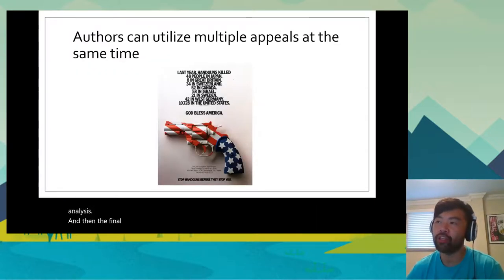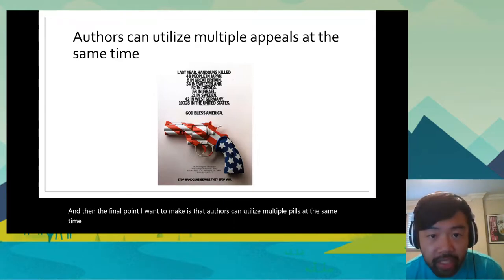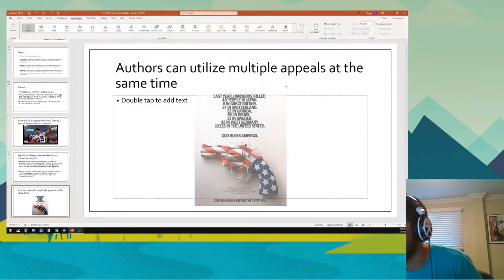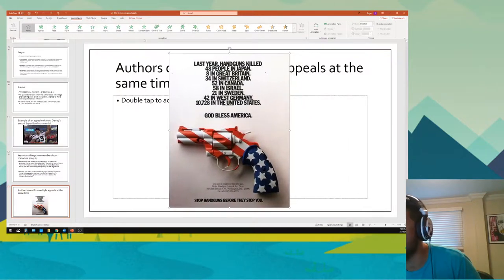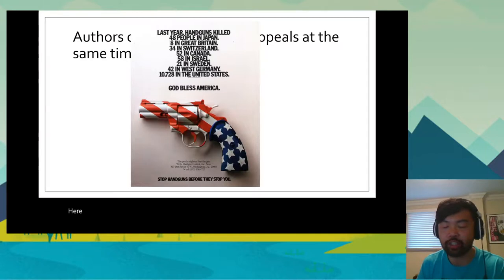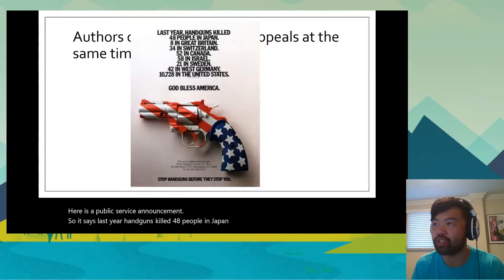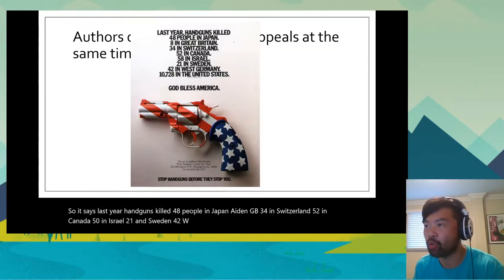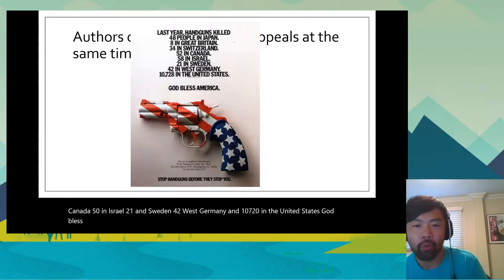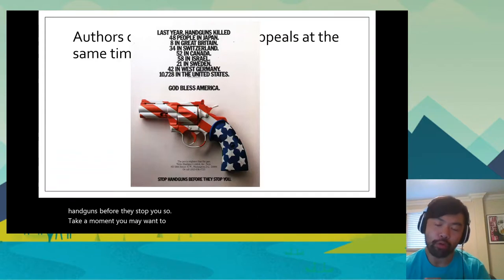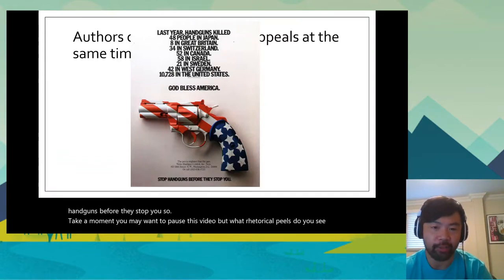Authors can utilize multiple appeals at the same time. Here is a public service announcement. It says: 'Last year, handguns killed 48 people in Japan, eight in Great Britain, 34 in Switzerland, 52 in Canada, 58 in Israel, 21 in Sweden, 42 in West Germany, and 10,721 in the United States. God bless America.' At the bottom there's a message that says: 'Stop handguns before they stop you.' Take a moment — what rhetorical appeals do you see being utilized in this PSA?